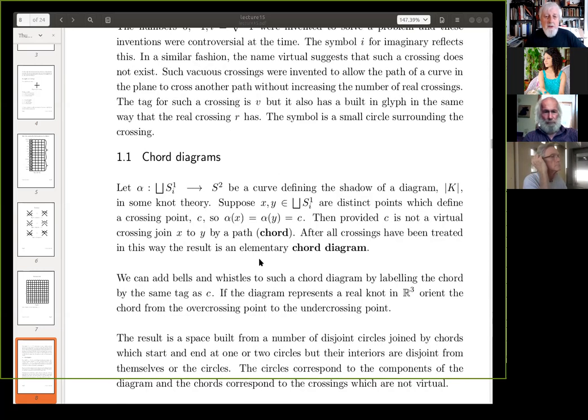And supposing we've got a curve, or a bunch of curves, if you like, in S2, and it defines the shadow of the diagram K in some knot theory. Supposing X, Y, in this, the target, inside the domain of this map are distinct points which define a crossing point. So, C, so alpha of X equals alpha of Y equals C. And provided C is not a virtual crossing, join X to Y by a path, a chord. Okay, so we've taken all these disjoint union of circles, and where they cross in the image, you join by a path, a chord.